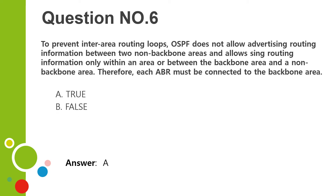Question number six. To prevent inter-area routing loops, OSPF does not allow advertising routing information between two non-backbone areas and allows routing information only within an area or between the backbone area and a non-backbone area. Therefore, each ABR must be connected to the backbone area. A. True. B. False. Answer: A.